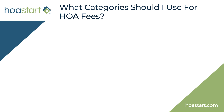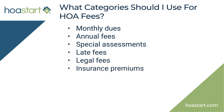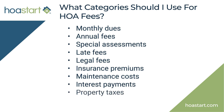What category should I use for HOA fees? When setting up an account for fees in QuickBooks, it's important to use the correct categories. Here are some of the most common: monthly dues, annual fees, special assessments, late fees, legal fees, insurance premiums, maintenance costs, interest payments, property taxes, transfer fees, and application fees. Determining what fees to include in each category depends on the type of items you are tracking. For example, if you're tracking monthly dues only, you could create one monthly dues category and track all payments.